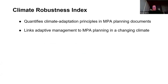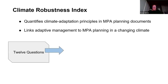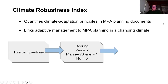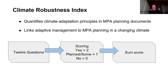Our team collected MPA management plans from around the world, and we were able to fully assess 223 plans in total using the climate change robustness index. We built off existing literature to develop a scoring approach that quantified the degree of implementation of climate adaptation planning in MPA management plans, linking adaptive management into MPA planning in a changing climate. We call this the climate robustness index. It is comprised of 12 questions that ask about climate change integration and the incorporation of adaptive management principles into management frameworks. We scored each question by assigning points to information within the plans and then summed the score — a very straightforward, transparent, and repeatable assessment.